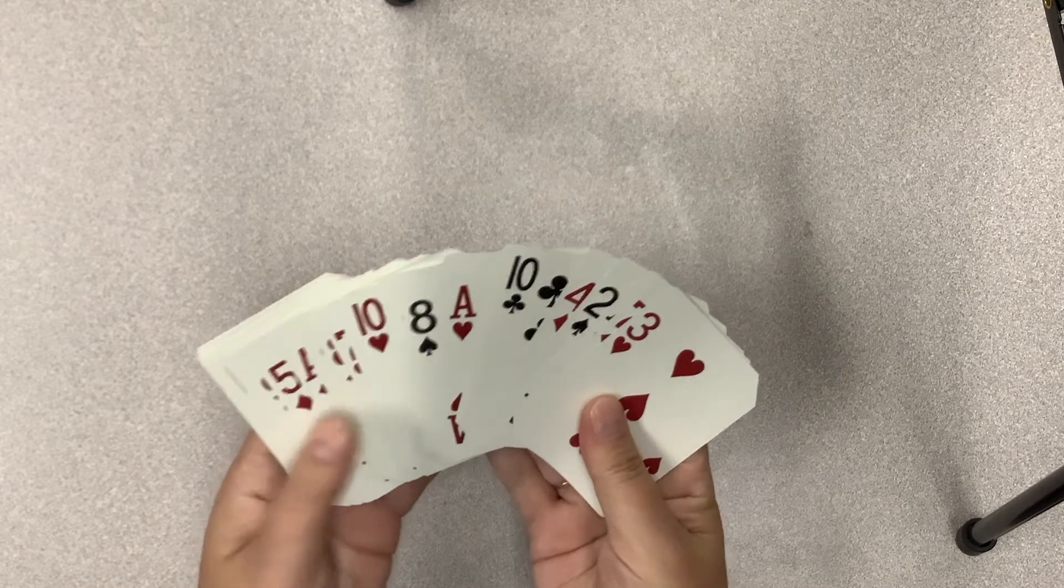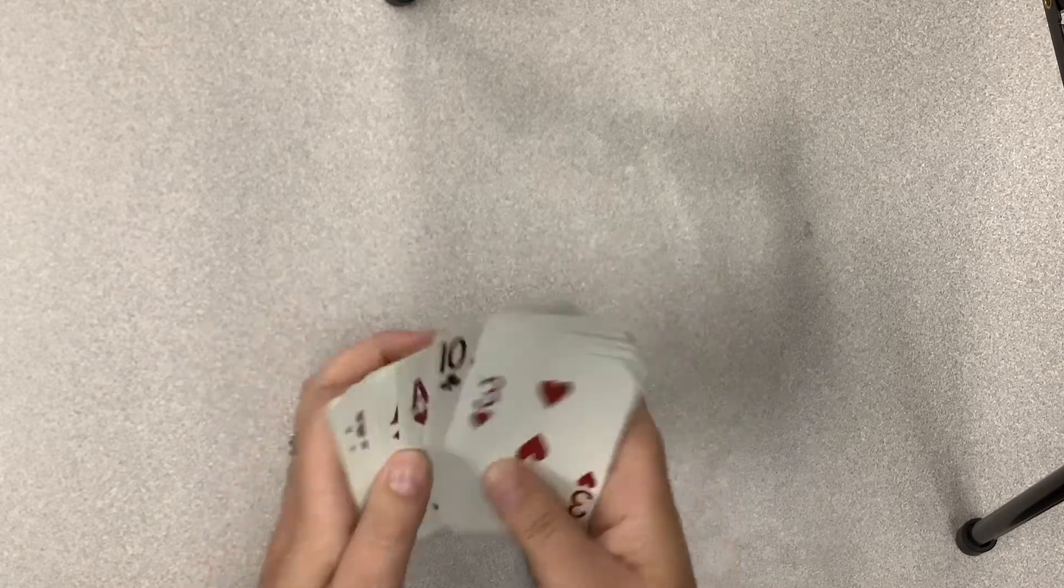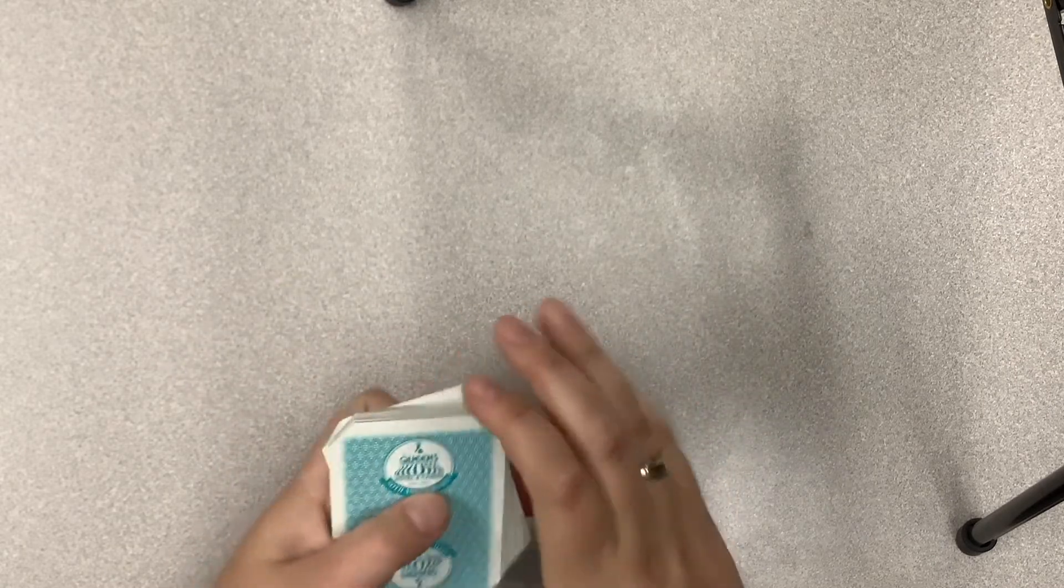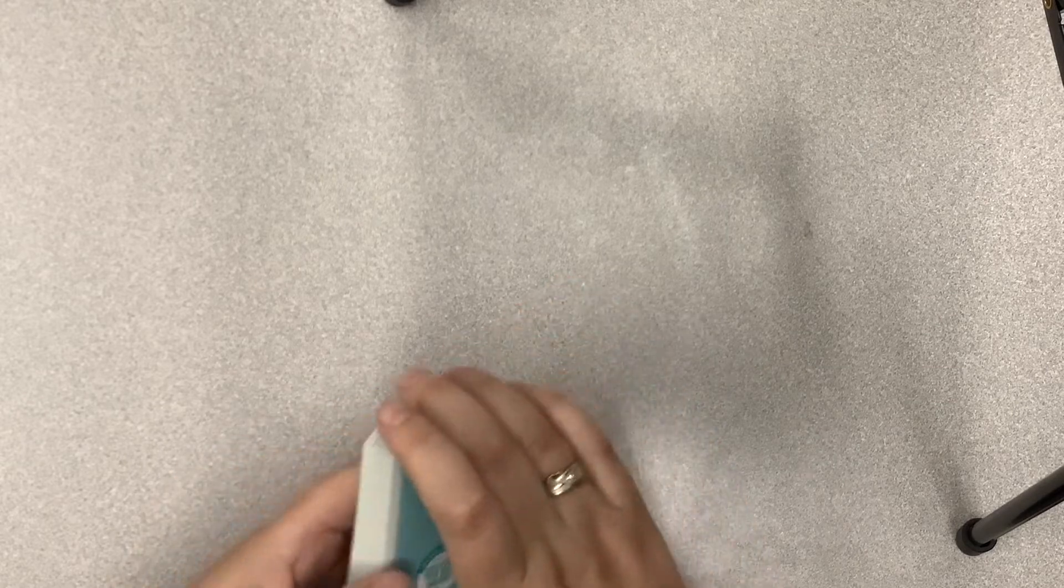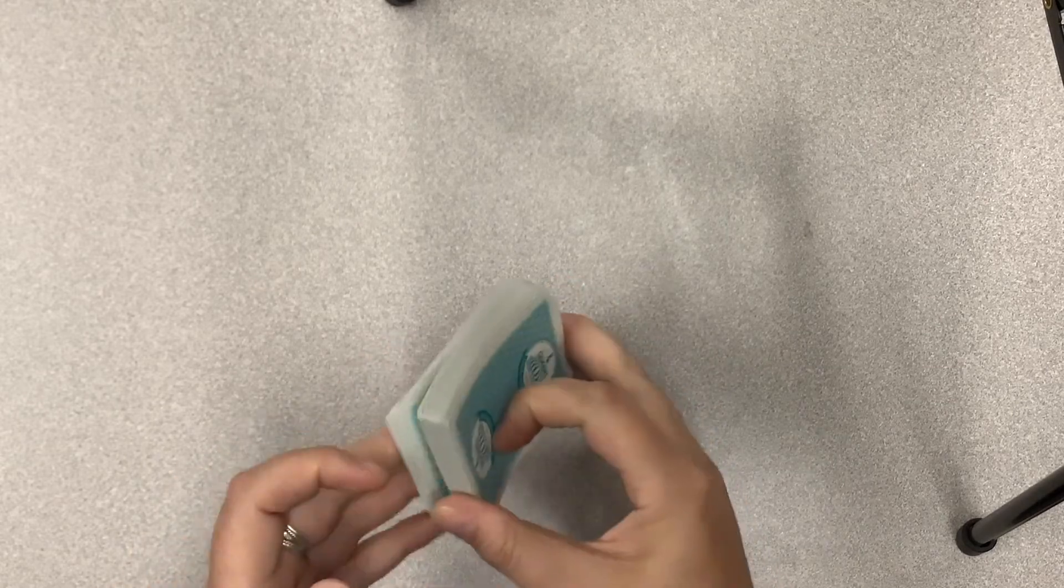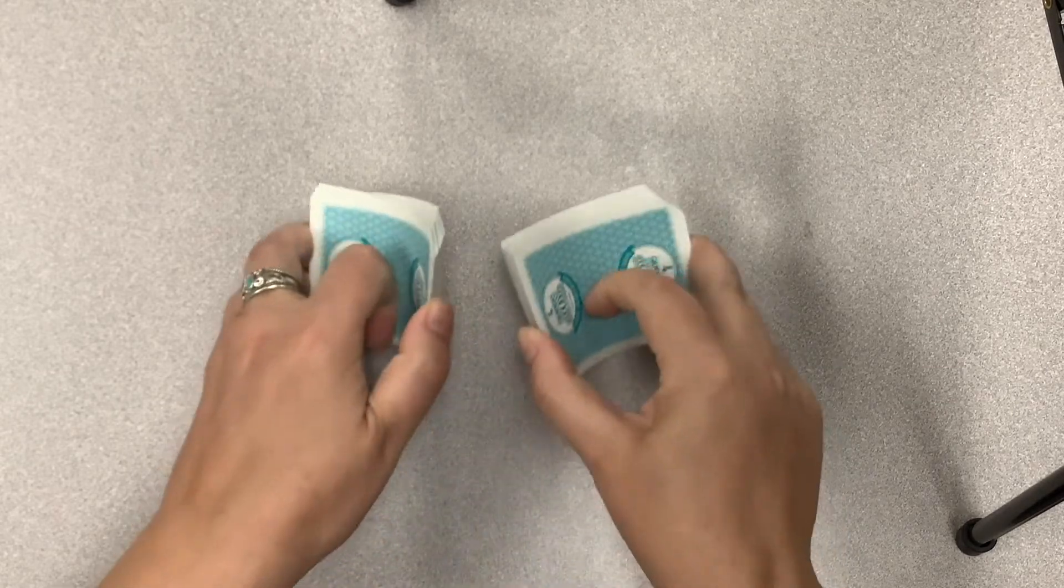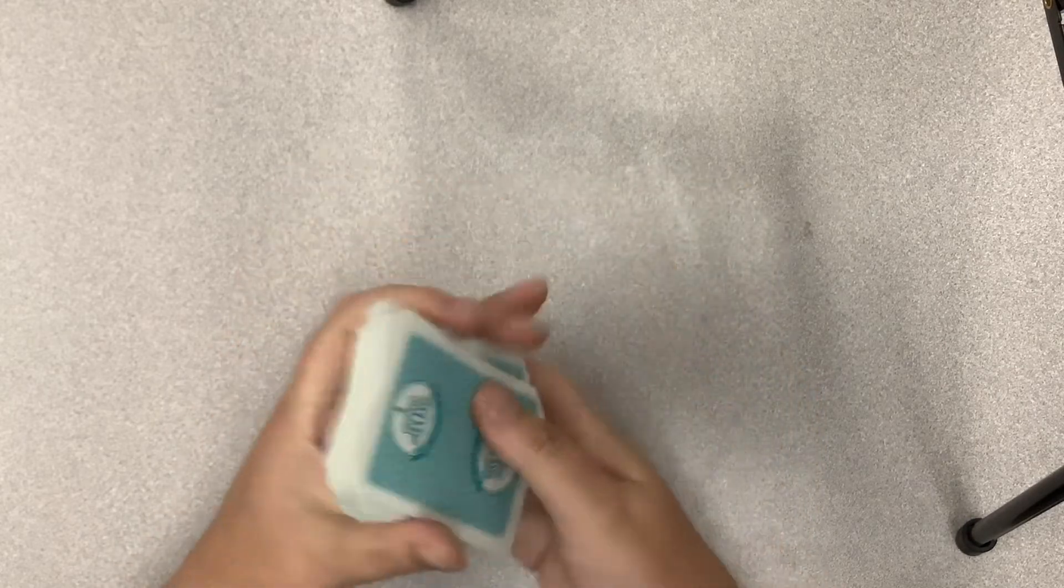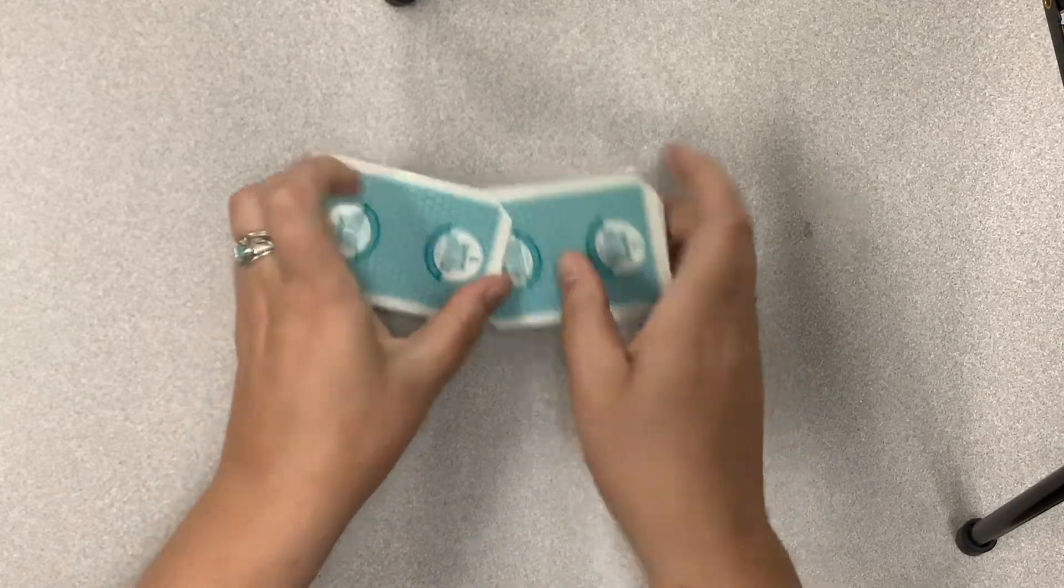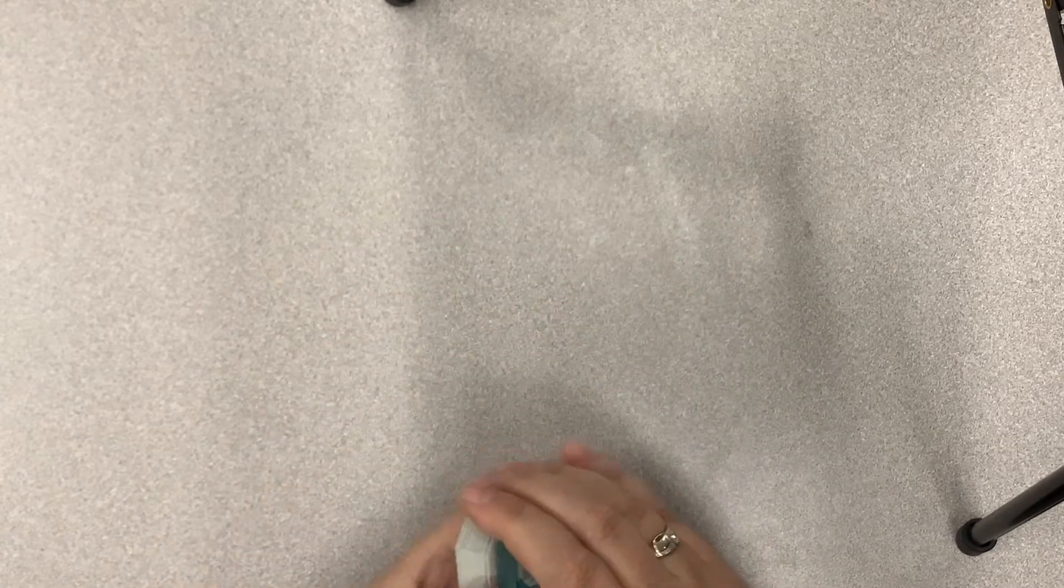For this trick you need ace through ten. This trick is called Count Up and this is the simpler version for younger children that are practicing counting to ten. So once you have ace through ten, which should be 40 cards, shuffle them up a few times and then you start this trick with a little bit of a setup.